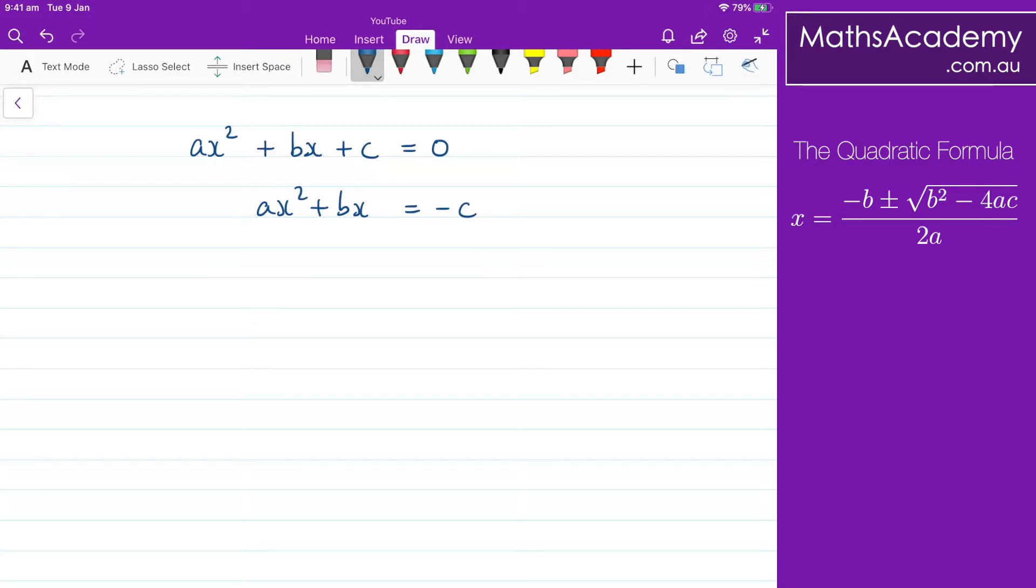We now divide all these terms by a so x² + (b/a)x is equal to -c/a.